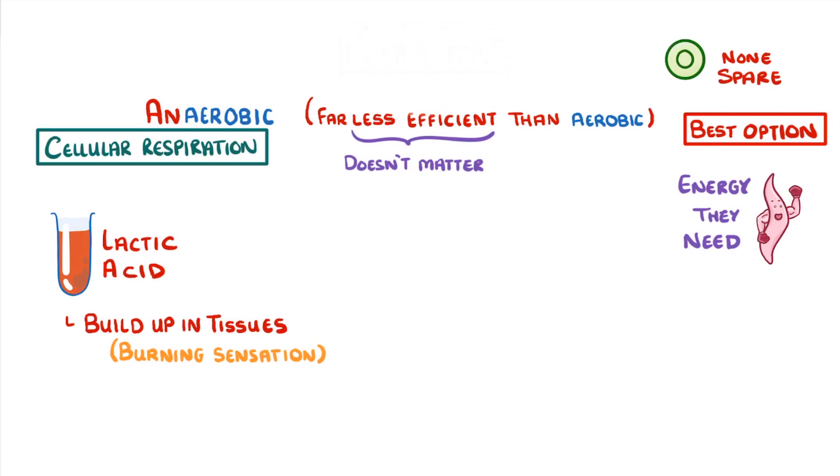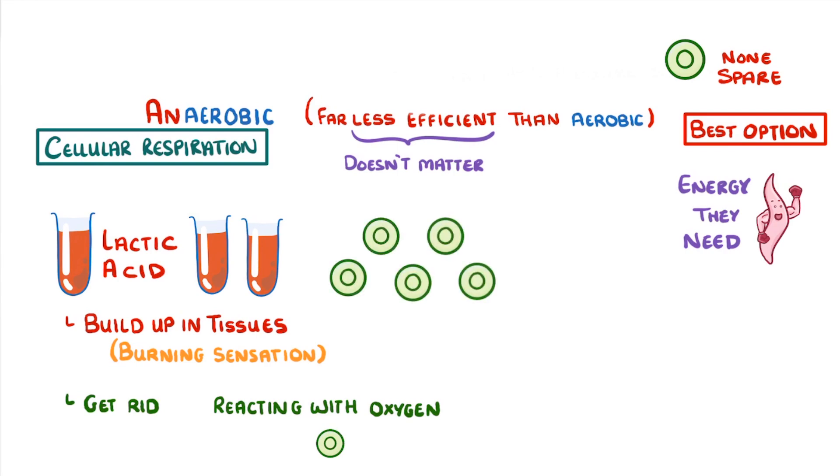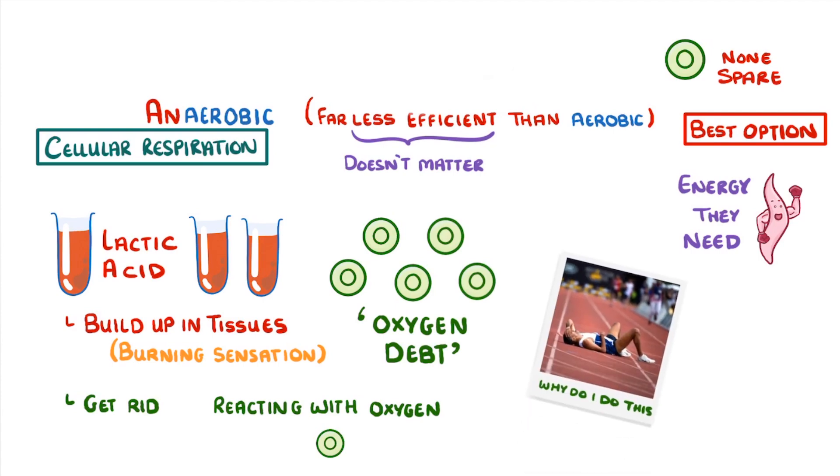Once you've finished exercising, your body needs to get rid of all of this lactic acid by reacting it with oxygen. So the more lactic acid that you've built up, the more oxygen you'll need, and we call this an oxygen debt. In fact, it's this oxygen debt that we're repaying when we double over and pant after a race.